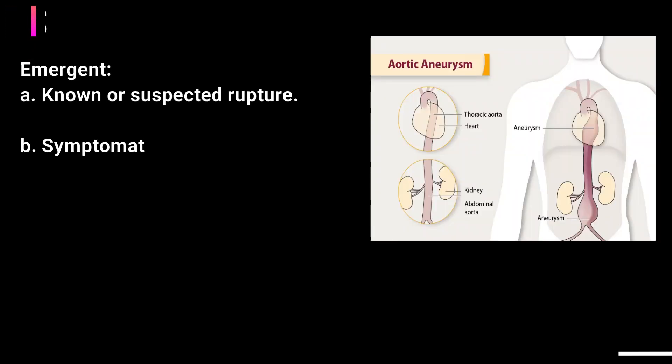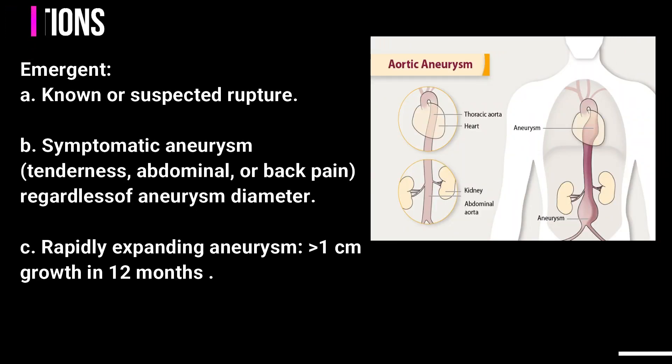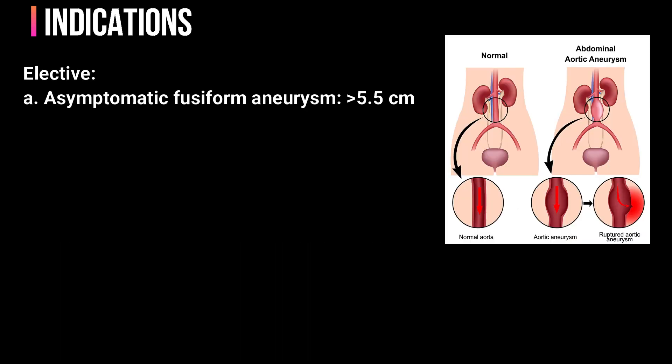The emergent indications for abdominal aortic aneurysm repair are: A) known or suspected rupture; B) symptomatic aneurysm regardless of aneurysm diameter; and C) rapidly expanding aneurysm, greater than 1 cm growth in 12 months.